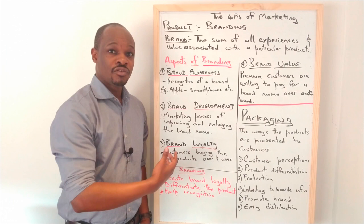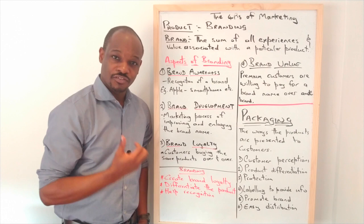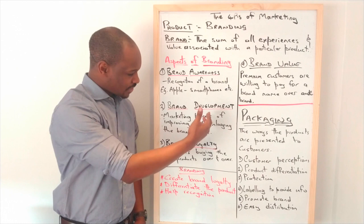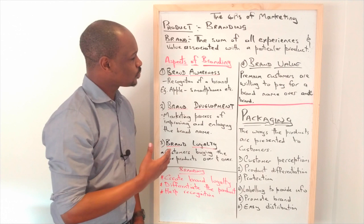So we're going to look at the aspects of branding. If you have a product and you want to create a brand, you want to create an identity for that product. I'm going to be looking at these four aspects of branding: brand awareness, development of the brand, loyalty of the brand, and the value that is being created by the brand.